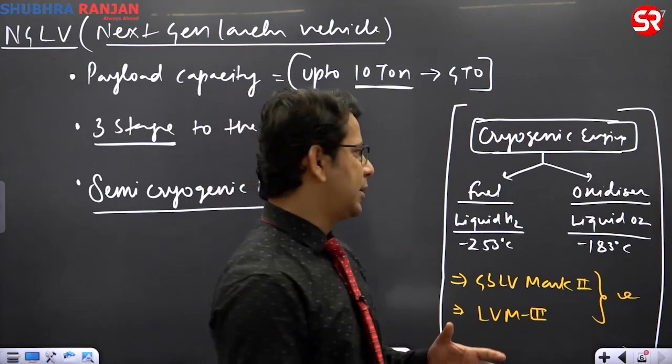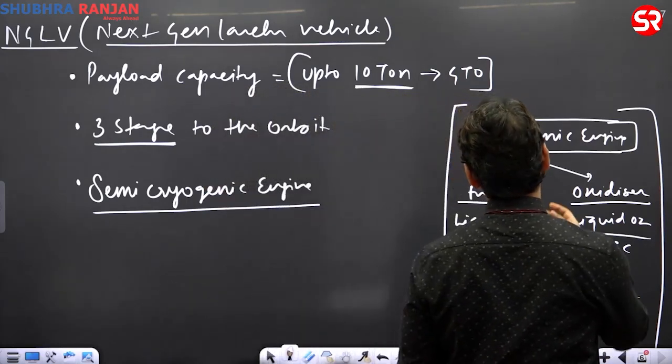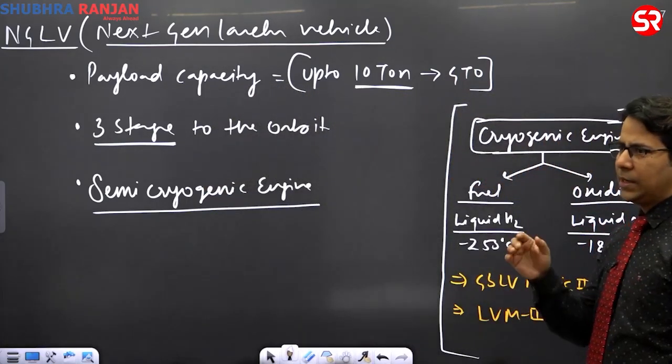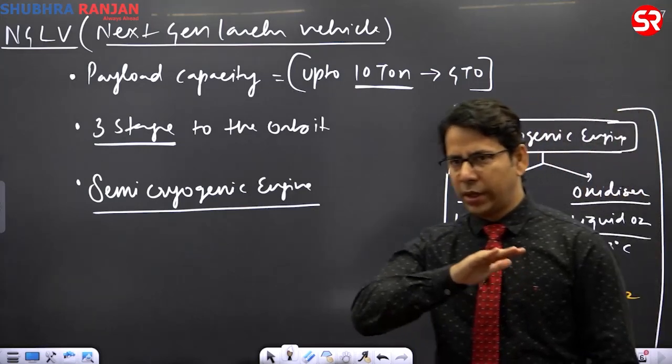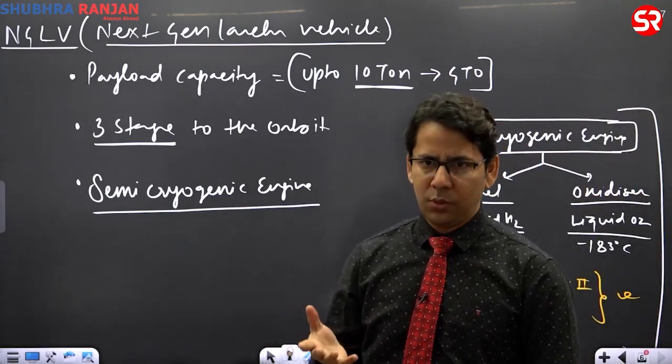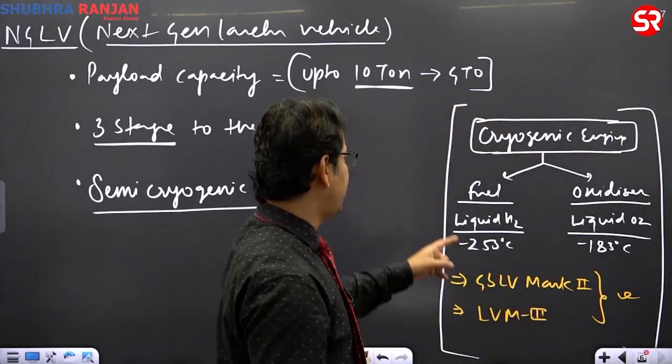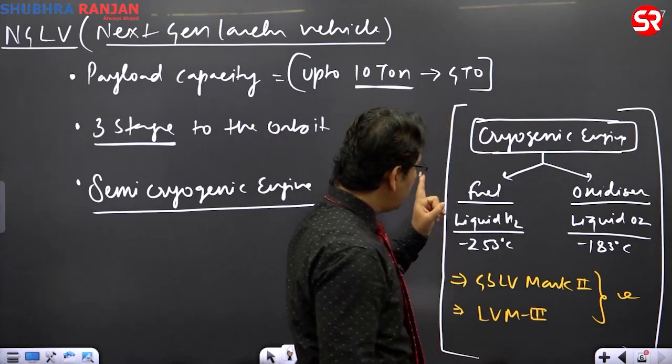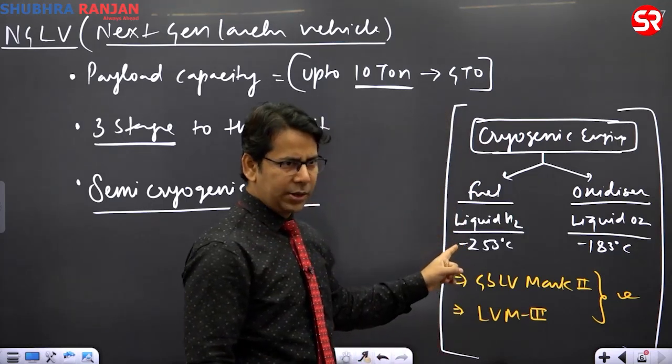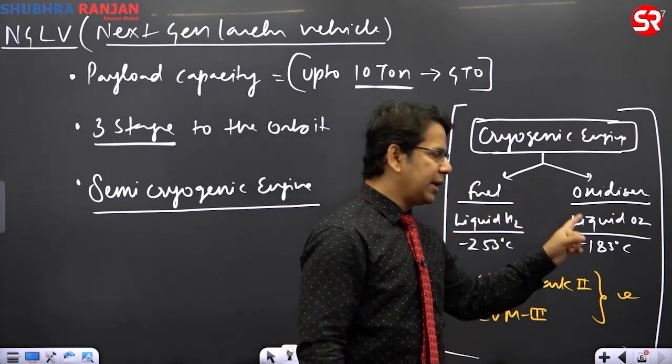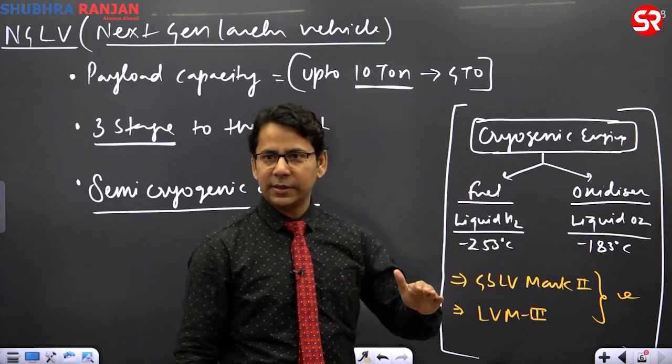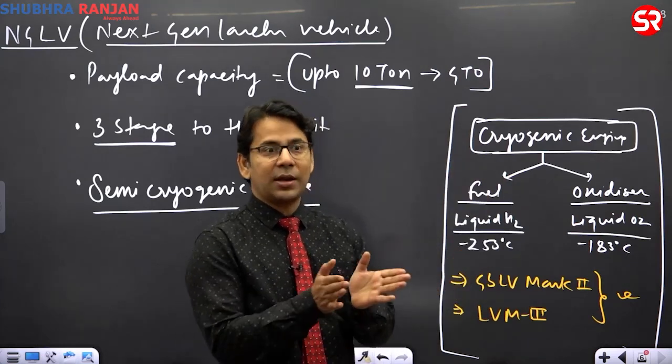So that is called cryogenic. Cryo means very low temperature. Any temperature that is below minus 150 degree will be known as cryo. And you can see like fuel is at minus 253 degree, it is a cryo temperature. And oxidizer, the liquid oxygen is at minus 183 degrees, again it is a cryo temperature. So that is called cryogenic engine.